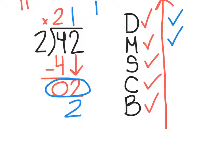Now, we move on to subtract. We subtract 2 minus 2, get 0. C stands for compare. Is the number I just wrote down less than my divisor? Yes, it is. That means it works.